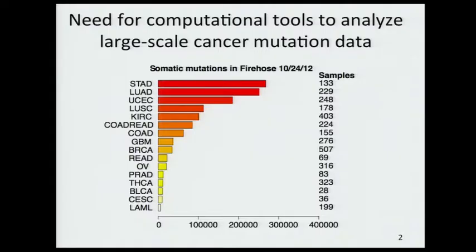First, some motivation. This group may not need this motivation, and we already saw a slide about a wave of data that was coming at us, but here is a snapshot of somatic mutations that were in Firehose at the Broad as of the middle of last month, and there are a couple of million of them. I have not included the PANCAN8, which was much larger than all of these. Suffice to say that there are a very large number of somatic mutations that we need to analyze, and there's a lot more coming.